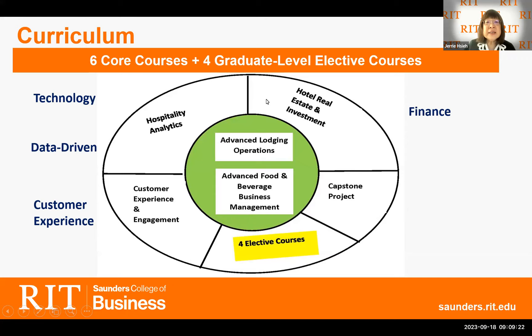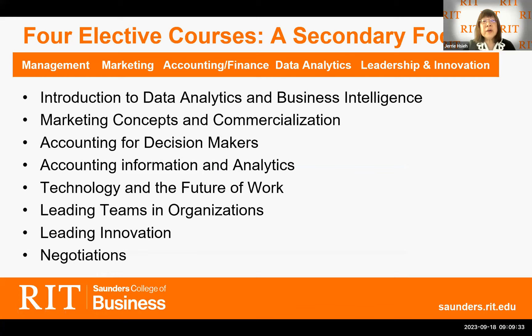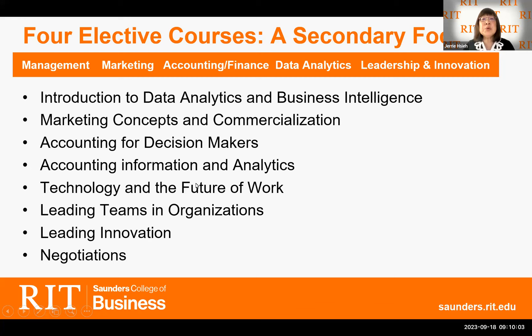In addition to the six core courses, students take four elective courses. These electives can be chosen from any of our master's degrees in Saunders College of Business. You can have a secondary focus in management, marketing, accounting, finance, data analytics, or leadership and innovation. This slide shows examples of possible graduate courses to develop your secondary focus.